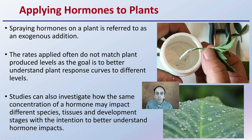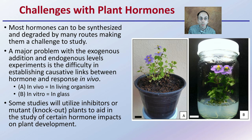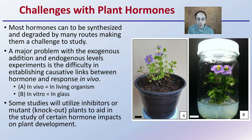There are challenges with studying plant hormones. Most hormones can be synthesized and degraded by many routes, making them difficult to study — it's not as simple as applying hormone X and getting a response like a fertilizer. When applied on an extracellular basis at exogenous levels, it's difficult to establish causative links between the hormone and the response in vivo. In vivo is inside the living organism, while in vitro is in glass — such as tissue culture. Just because something is observed in tissue culture doesn't necessarily mean it will translate to a field application.